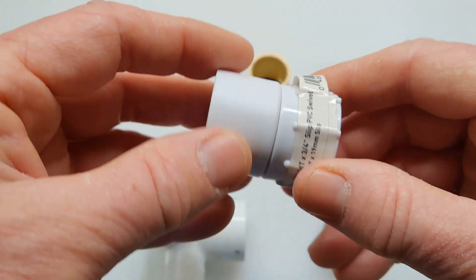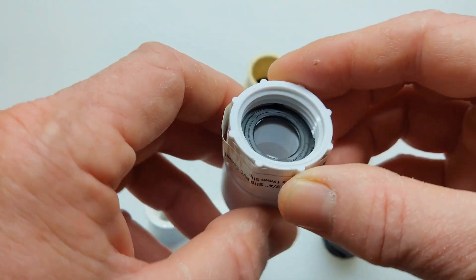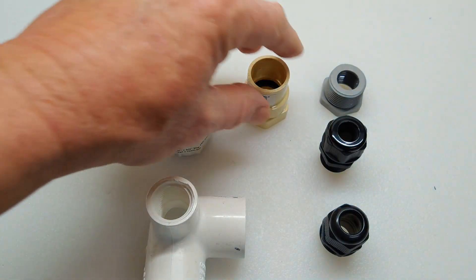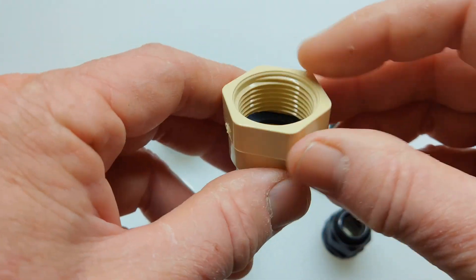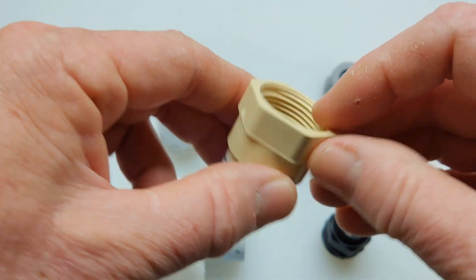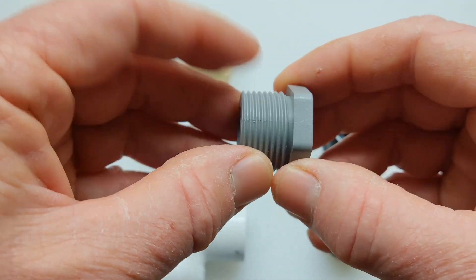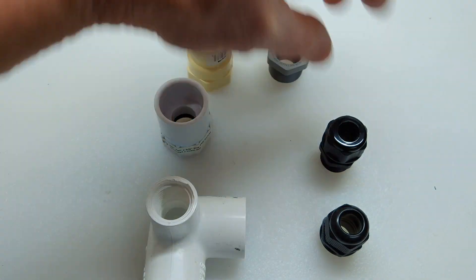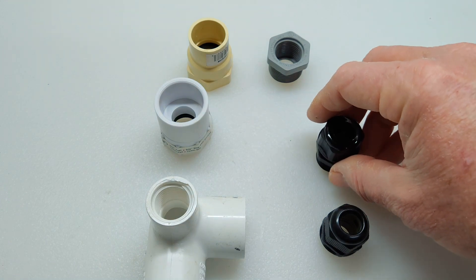This is the swivel, which is a 3¼ inch slip-in and a 3¼ inch female threaded section. This is a reducer that goes from 3¼ inch to 1½ inch. And then I have two ½ inch gland nuts.